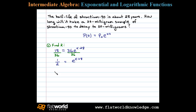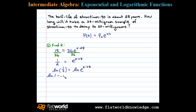Now at this point we'll apply the one-to-one property for logarithms, and since the base here is e, I'll choose to apply the natural log to both sides. We have the natural log of one-half equals the natural log of e to the k times 28 power. We do that so that we can apply the power rule for logarithms, writing this exponent as a coefficient.